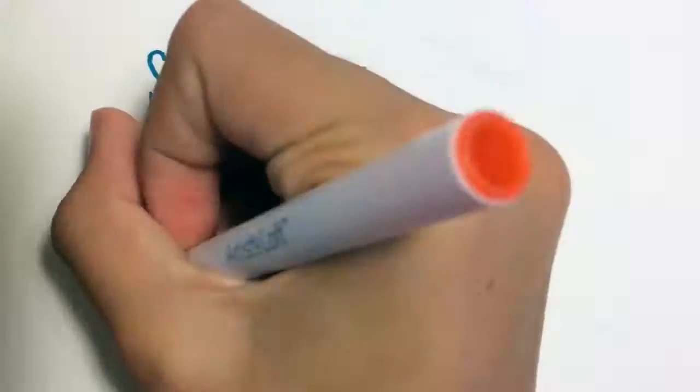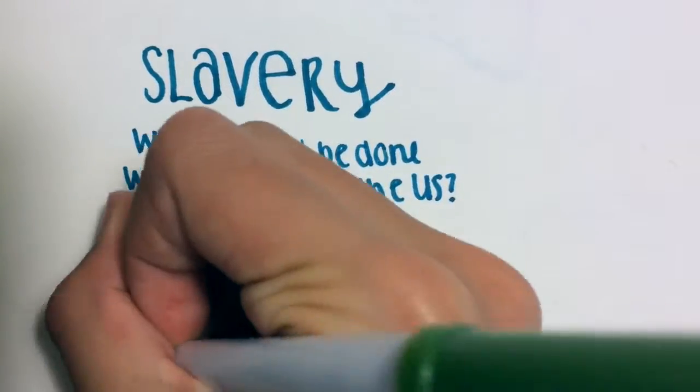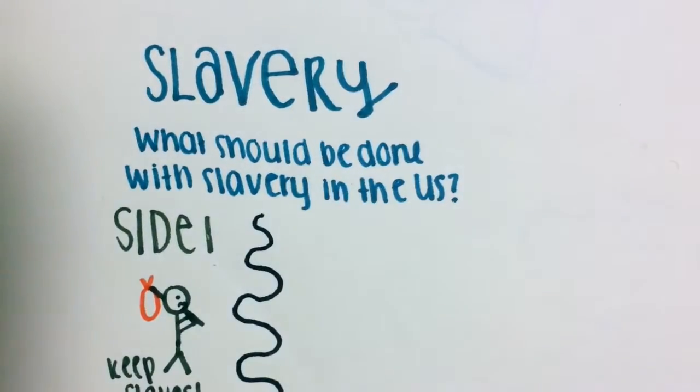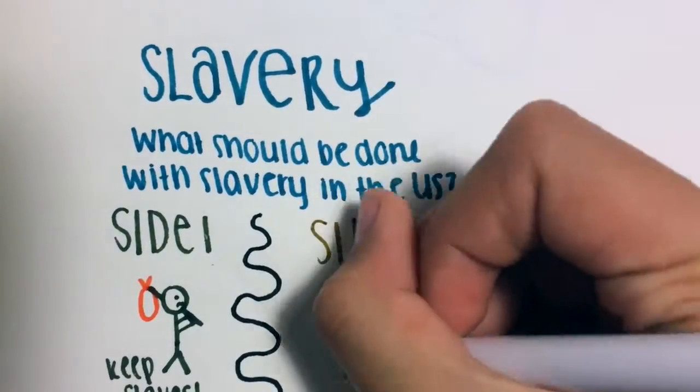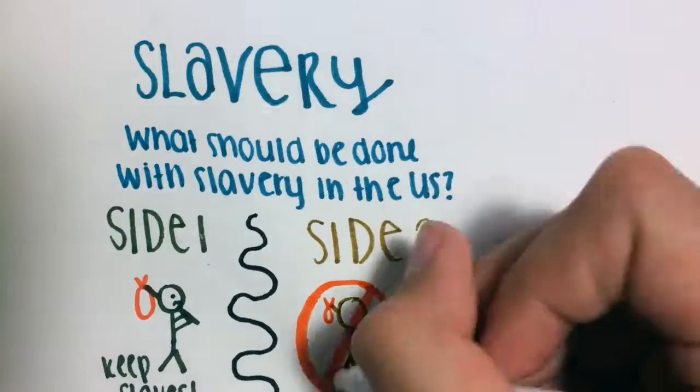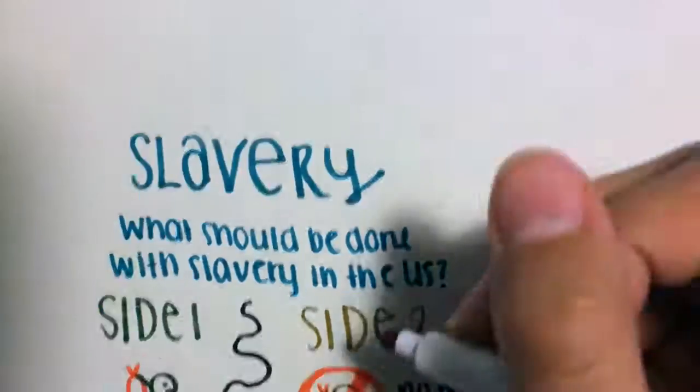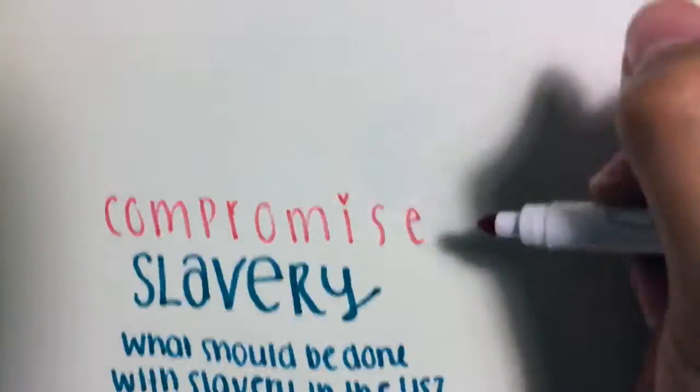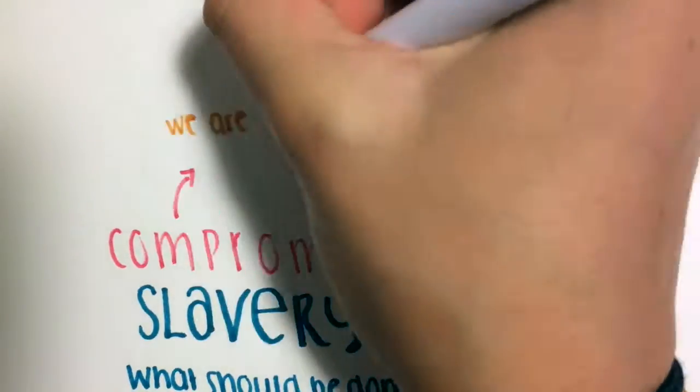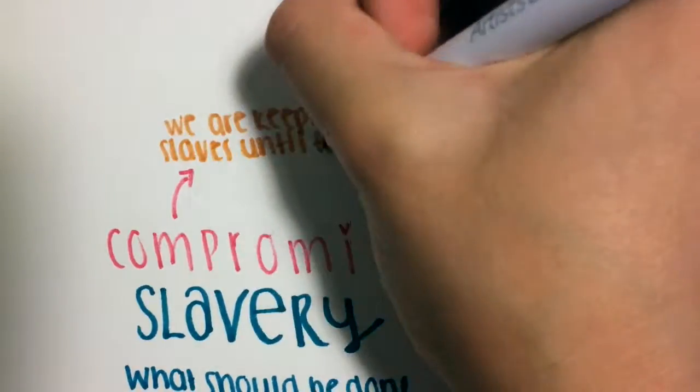Last but not least, slavery had to be fixed. Simply, Side 1 said that they should keep slavery, and Side 2 said that they should get rid of it. They resolved it with, We are keeping slaves until the Civil War. Slaves should be counted as three-fifths of a full person. Isn't that odd?